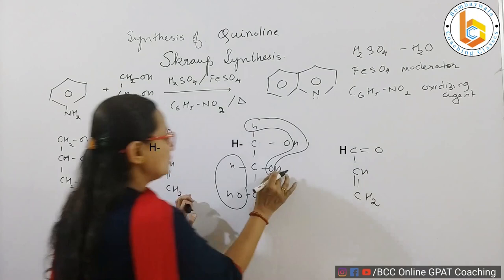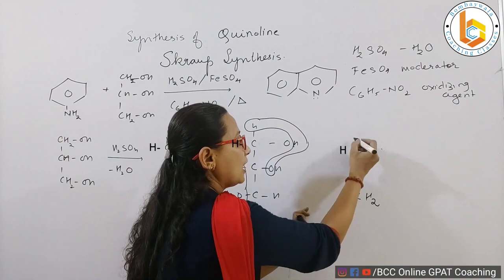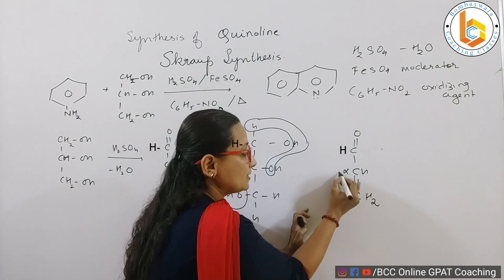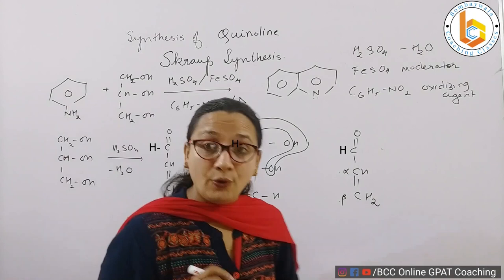So there is formation of acrolein, which can also be called as - this is carbonyl, this is alpha, and this is beta - this is referred to as alpha-beta unsaturated carbonyl compound or I can call this as acrolein.